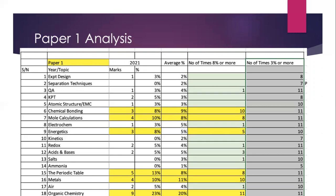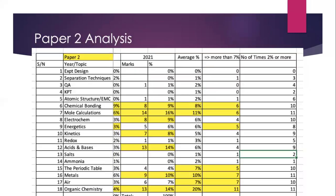I wrote down the number of marks allocated for the topics in both Paper 1 and Paper 2, and computed the average percentage that each topic appeared over those 10 years. I also included the number of times a topic had 8% or more in Paper 1 and 3% or more in Paper 1. For Paper 2, I decreased the threshold to 7% and 2% respectively.